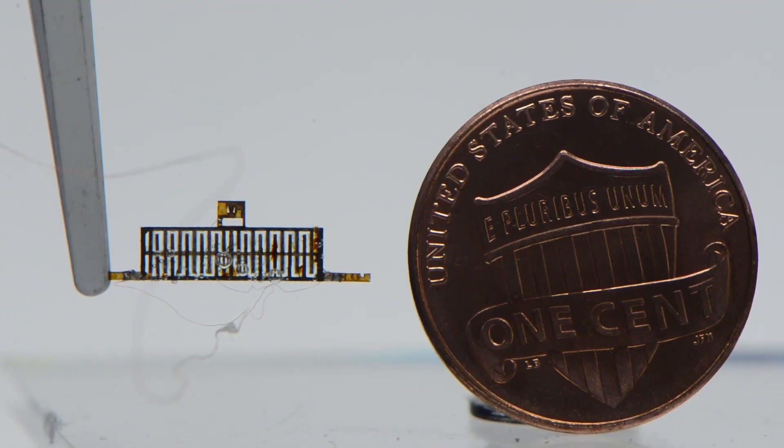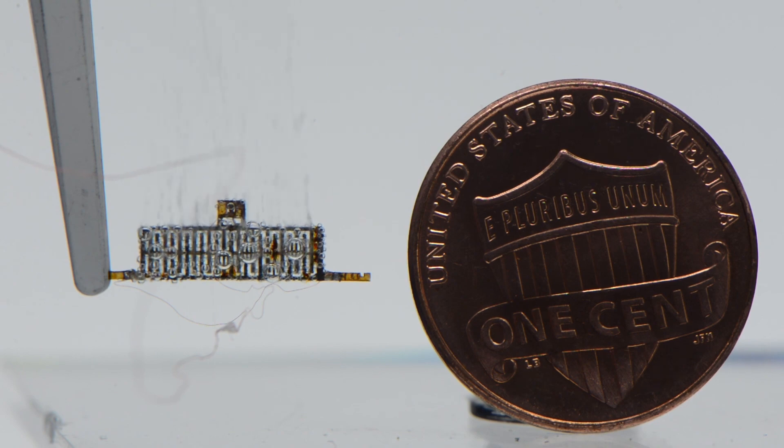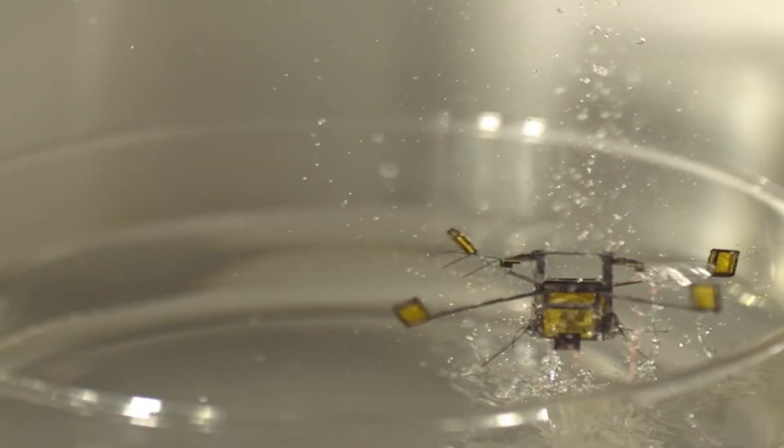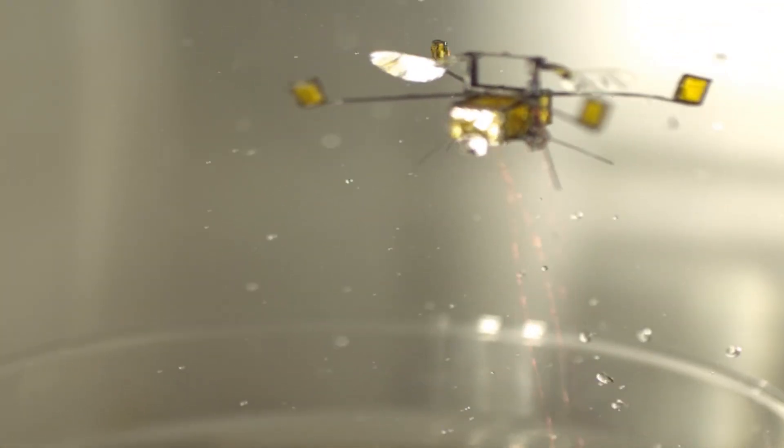Imagine the possibilities. These tiny robotic creatures could assist in pollinating vast fields of crops, ensuring their continued growth and abundance. They can also reach areas that are inaccessible to traditional methods of pollination, making them a game-changer in agriculture and horticulture.